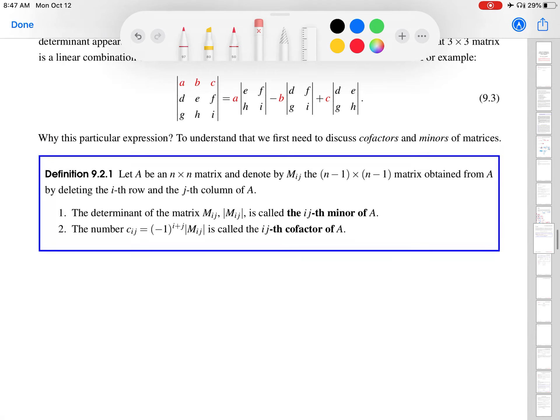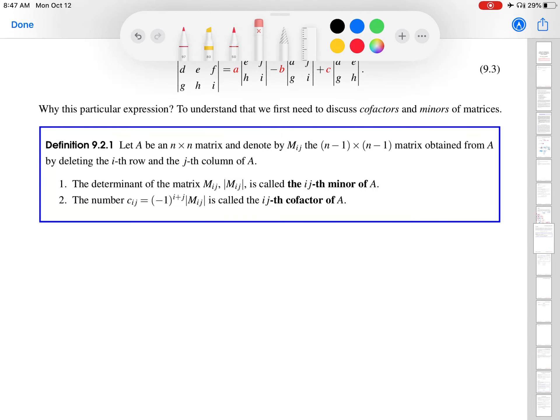Okay, so what is a minor? So in this definition, if we read here, I have an n by n matrix and I'm going to denote by Mij the matrix obtained by deleting the i-th row and the j-th column. Let me just give you a quick example there.